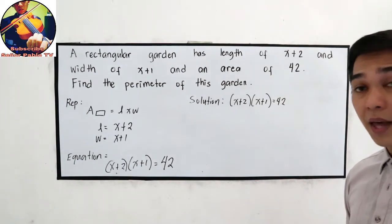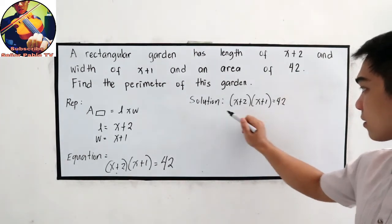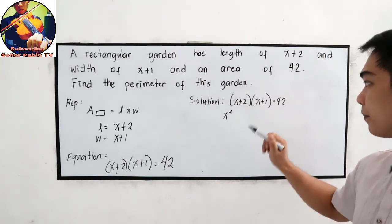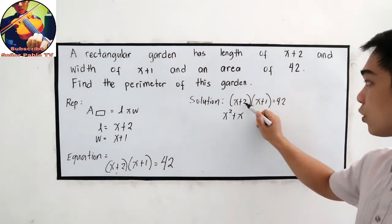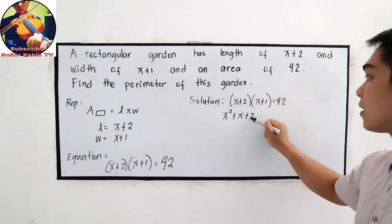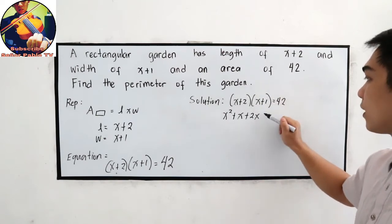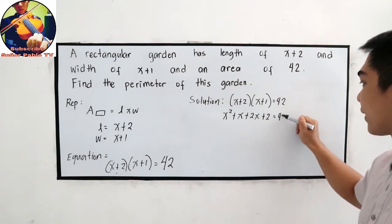So let us copy our equation. x plus 2 times x plus 1 is equal to 42. Now, FOIL method: x times x is x squared, x times 1 is positive x, 2 times x is positive 2x, 2 times 1 is positive 2. And that is equal to 42.